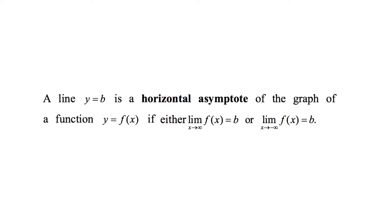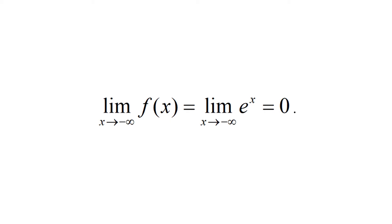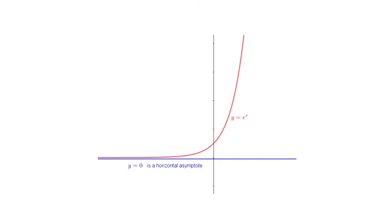A line y = b is a horizontal asymptote of the graph y = f(x) if either lim(x→∞) f(x) = b or lim(x→−∞) f(x) = b. For example, consider f(x) = eˣ defined on the entire real line. We have lim(x→−∞) eˣ = 0. Hence y = 0 is a horizontal asymptote to y = eˣ.